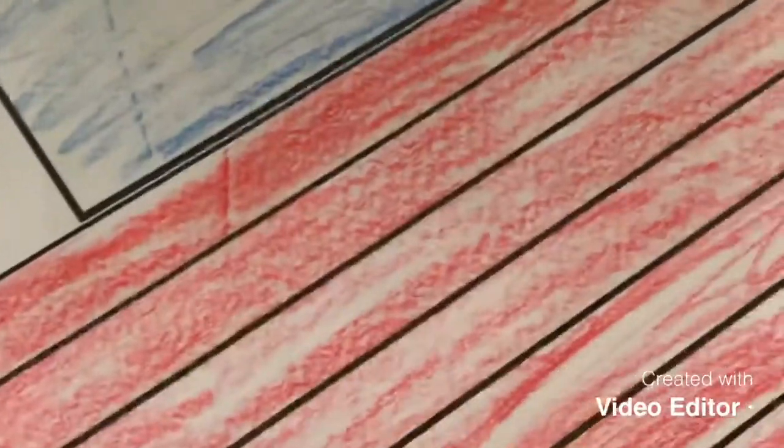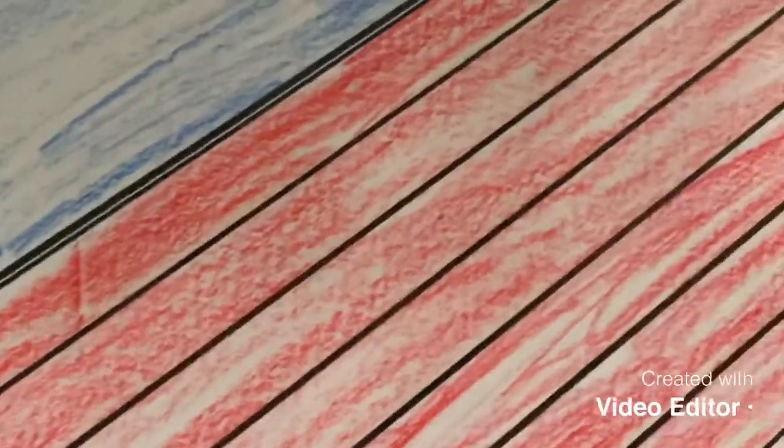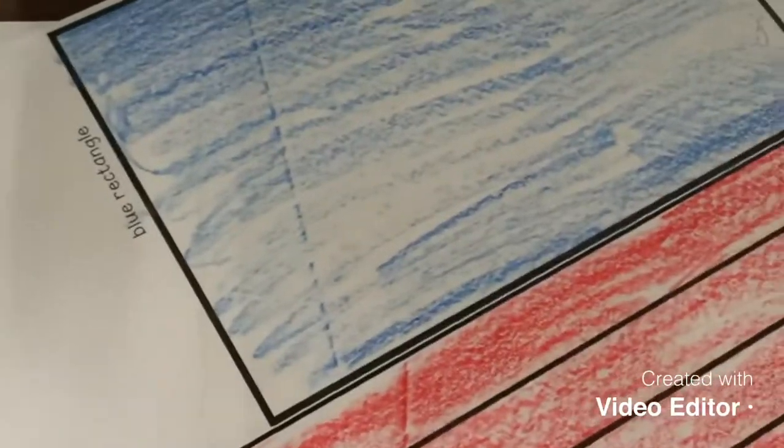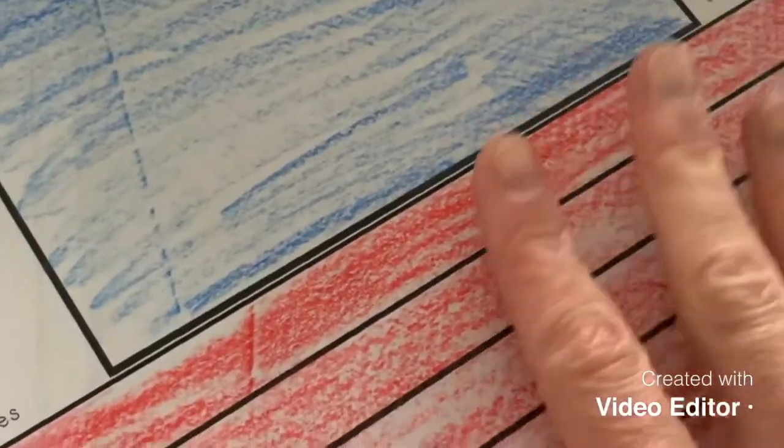Okay, once you are colored, hopefully nicer than mine, what I want you to do is cut out the rectangle and then cut out each stripe. So you're only cutting on the dark black lines.